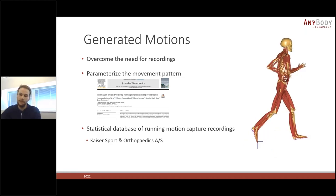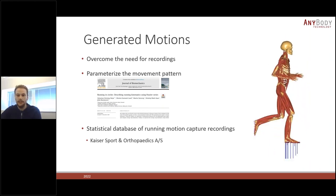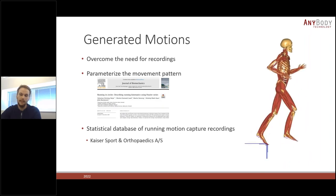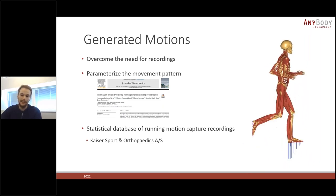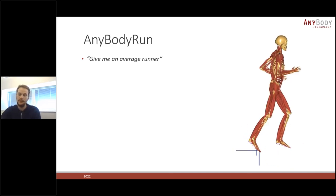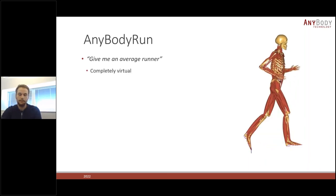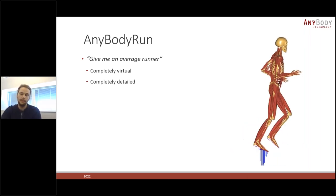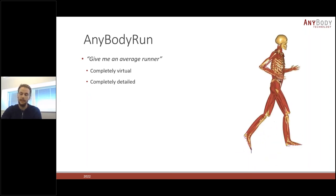When we put all these things together, we can generate completely synthetically created running styles — there's no motion capture recording behind the exact style. We called this AnyBody Run as a service name. We can now answer questions like 'I need an average runner' — we can generate the average running style based on our database. It's completely virtual, no field work required, yet we still have the full benefit of our detailed musculoskeletal model and can investigate all relevant simulation parameters.